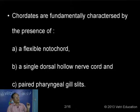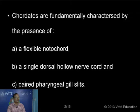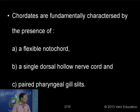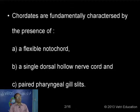The chordates are characterized by three important characteristics. All animals are born with a flexible rod called the notochord. This notochord is not a bone structure, as normally found in the lower group of organisms. It is made up of vacuolated cells, that is why we use the word flexible rod.